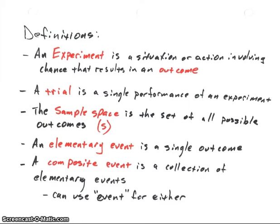An elementary event is one single outcome or one possible outcome in that sample space. A composite event could be a collection of elementary events. And the term event can be used for either. So I'll just use the term event when I'm talking about events. It could be either an elementary event or a composite event.